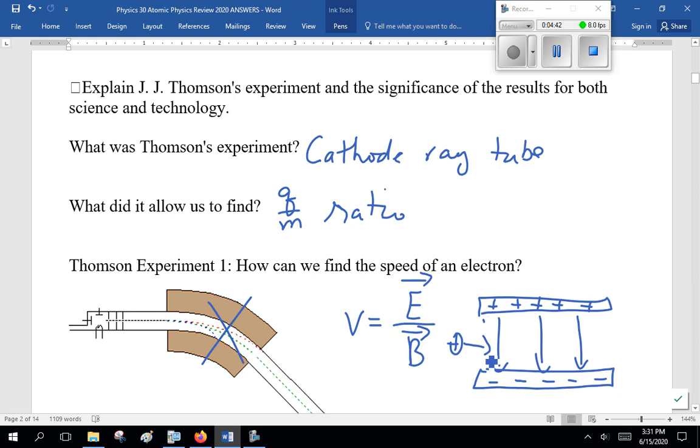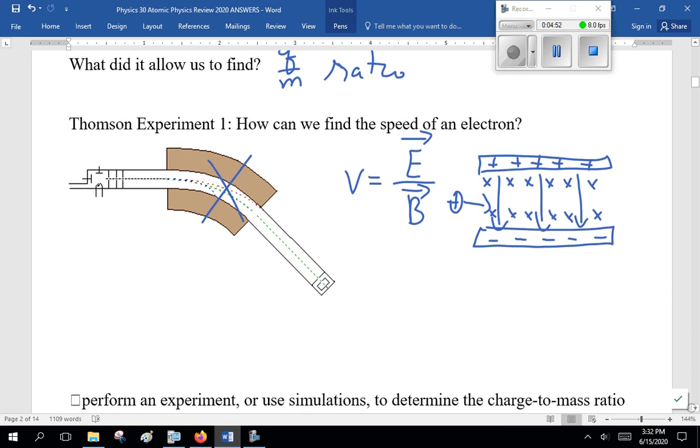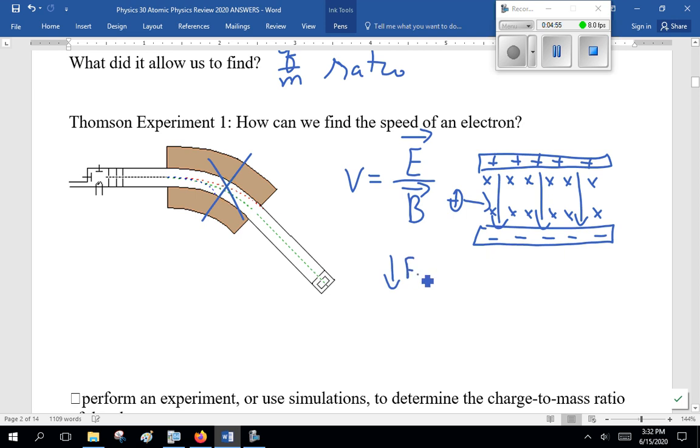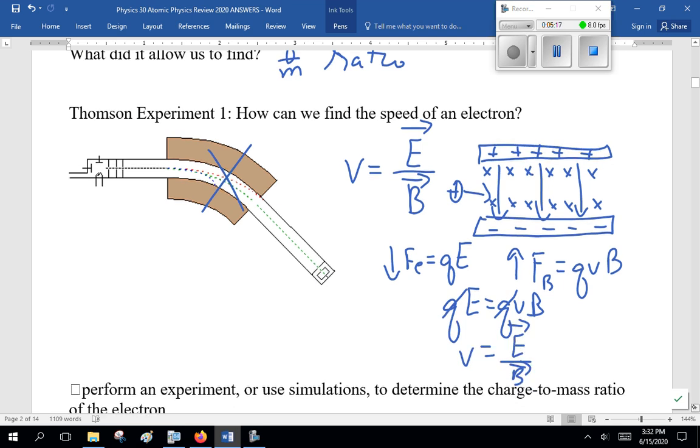How can we find the speed of an electron? Well, we talked about that in a voltage selector. We get an electric field divided by a magnetic field. Now, as I said very quickly, I don't want to spend a lot of time on something I already talked about. Go back and watch the magnetism. The force electric, which is QE, is down. Force magnetic, QVB. QE equals QVB. Charges cancel. Voltage is electric field strength divided by magnetic field strength.